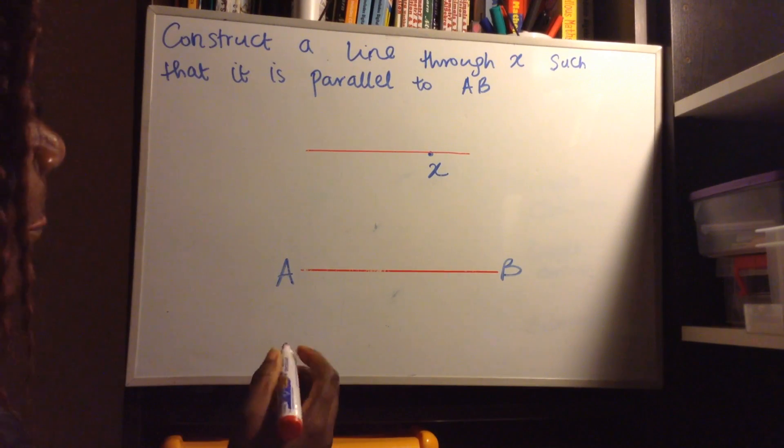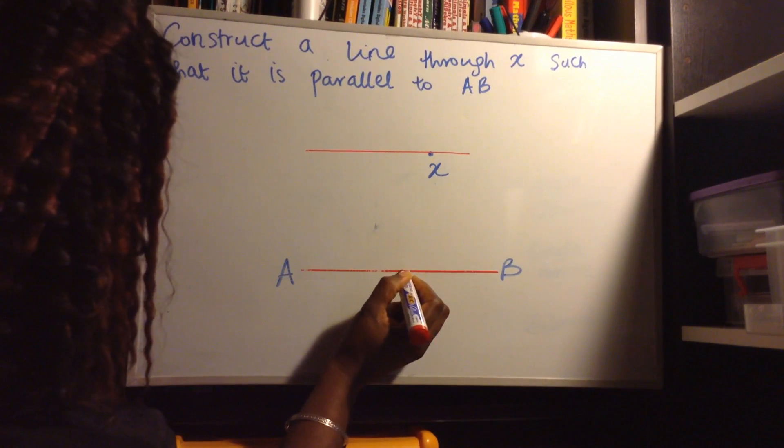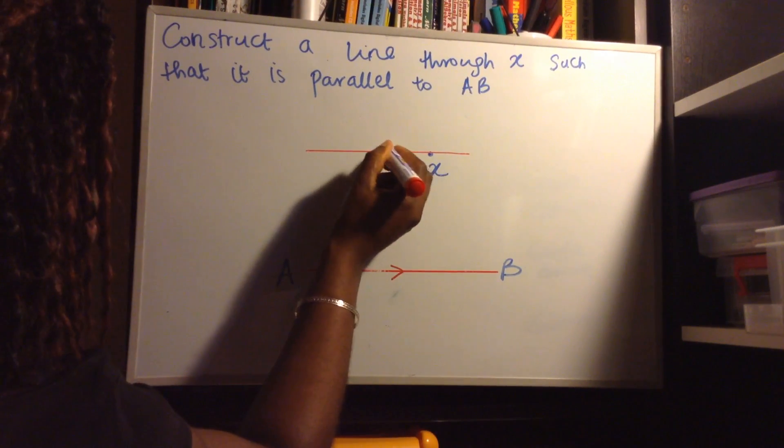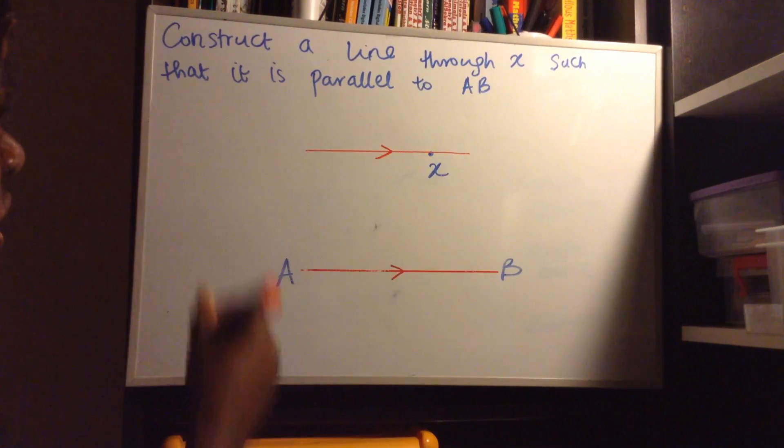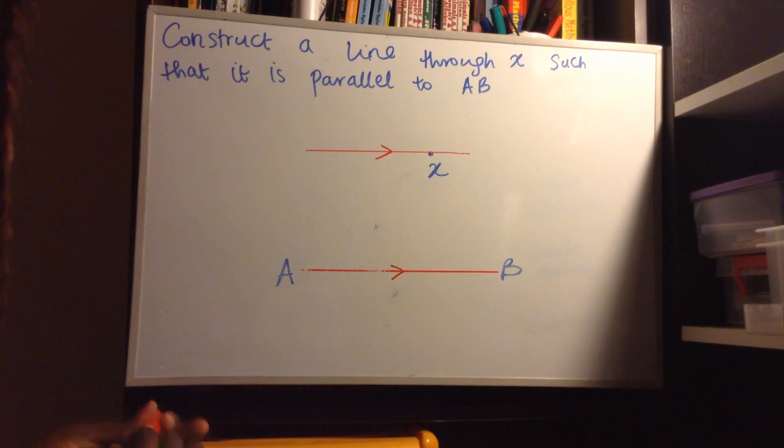The final step is to include a set of arrows. Okay, pointing in the same direction to show that they are parallel lines. Those arrows are the things that show that they are parallel lines. Now I have two arrows.